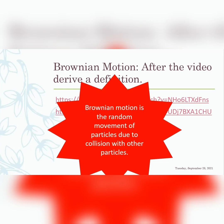The same applies to smoke particles colliding with air particles, and the carbon particles mentioned in the video — they are colliding with something because particles of matter are moving. So Brownian motion is the random movement of particles due to bombardment or collision with other particles.